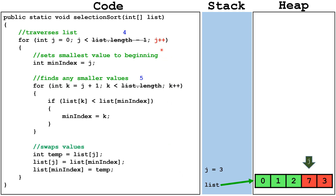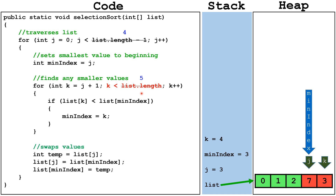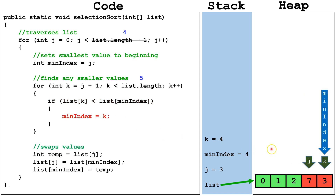We increment j by 1 to 3. We check is j still less than 4 — it is. We set min index equal to j. We set k equal to j plus 1. We check is k still less than 5 — it is, so we continue. We check is list index k smaller than list min index — it is, so we set min index equal to k. We get to the end of the internal for loop and increment k by 1. We see k is out of bounds. We check is k less than list.length — it is not, so we terminate the internal for loop. We swap the values that min index and j are pointing at. Since we have reached the end of the internal for loop, we can now mark index j as sorted.